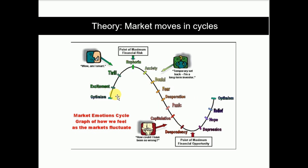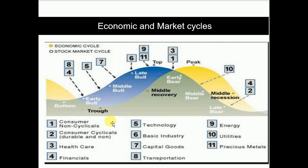The problem with this illustration is that it doesn't happen in one clean sweep. During a euphoric stage it corrects, then goes up again, then down again, then up again. But if you notice the long-term trend and smooth the curve, this is how it looks overall.